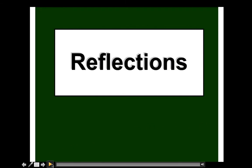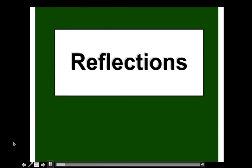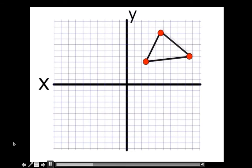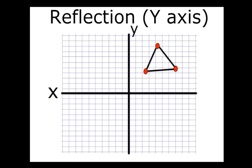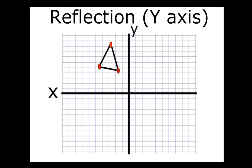Here are some examples of reflections. Here's an example of reflecting over the x-axis, so the mirror is the x-axis. And there's reflecting over the y-axis, so the mirror would be the y-axis.